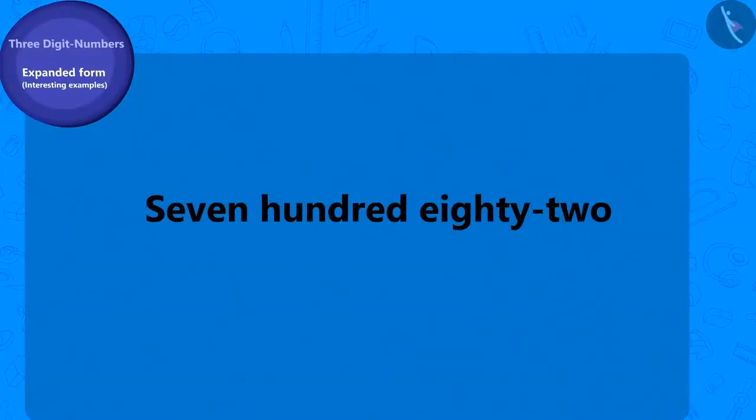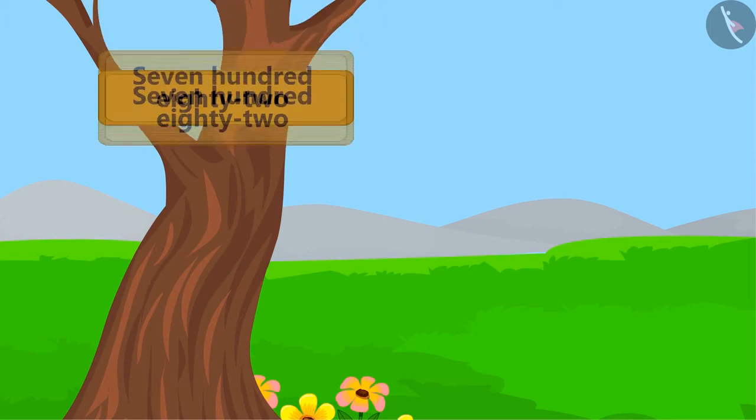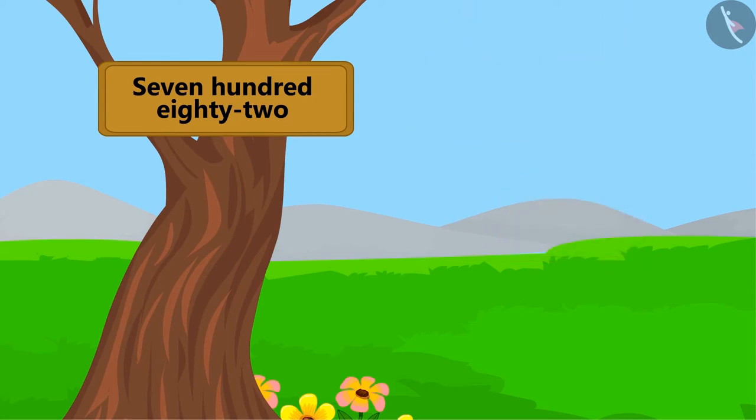There were 782 birds. Now, write the expanded form of this number with me. 782 is 82 ahead of 700. Therefore,